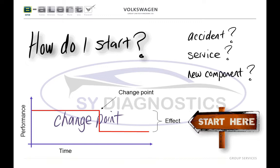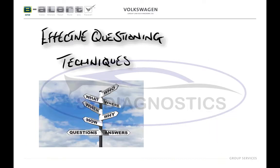You can make sure this doesn't catch you out again by using the B-ALERT process and asking the customer about when the fault started. Bear in mind that sometimes they won't have a change point — this could be because it's a normal feature of the vehicle, or maybe they've just purchased the car like this. To get all this information from the customer, we need to use the correct type of question techniques.